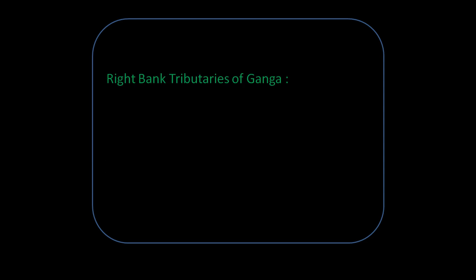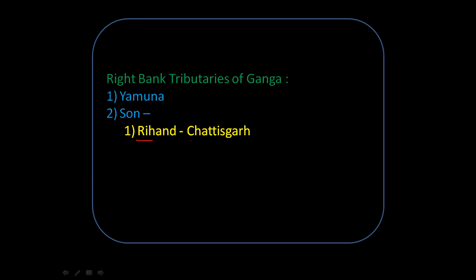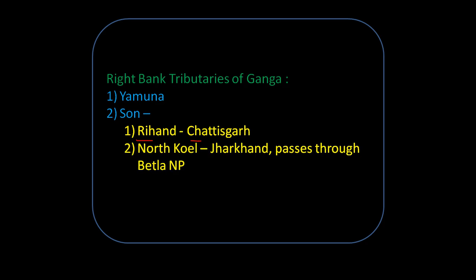Just as we saw the left bank tributaries, there are right bank tributaries of the Ganga. There are only two major ones: the Yamuna and the Son. In turn, the Son has tributaries — Rihant, which originates in Chhattisgarh, and North Koyal, which originates in Jharkhand and passes through Betla National Park. These are the right bank tributaries of the Ganga.